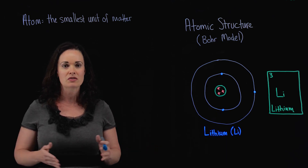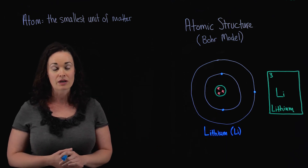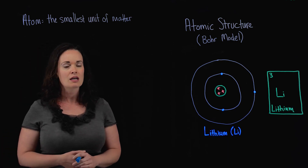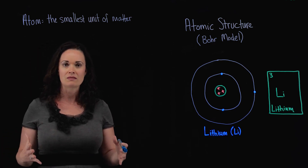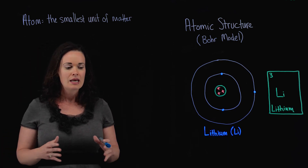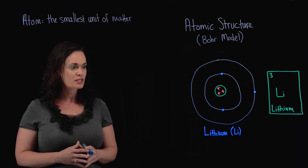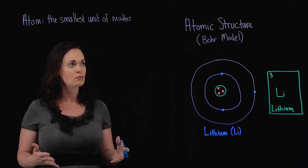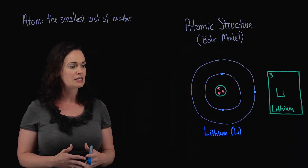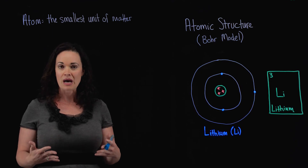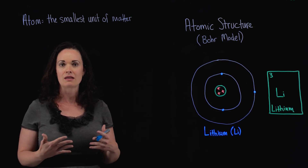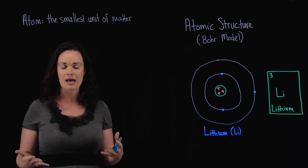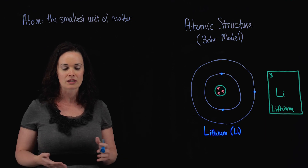What I want to do is start from the ground level, assuming that you have no chemistry background whatsoever, and talk about what atoms are — define them — and then also teach you about what's known as the Bohr model. The Bohr model is a model that scientists have come up with that represents what an atom would actually look like.